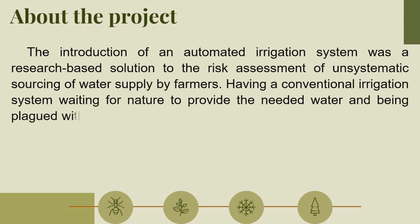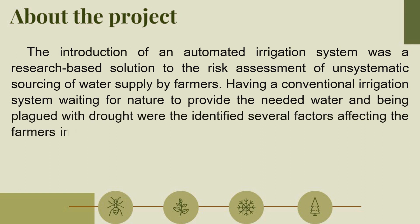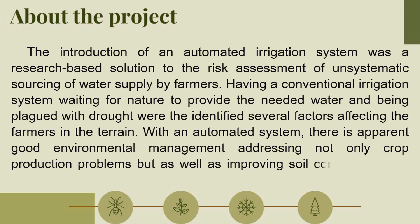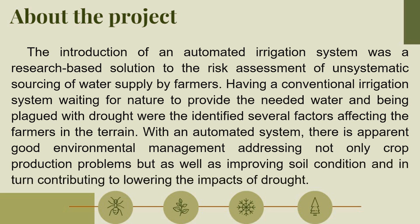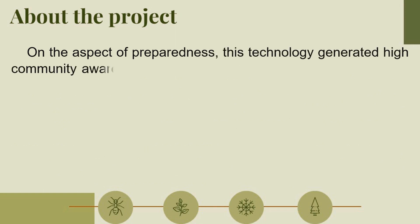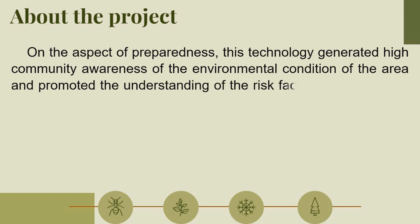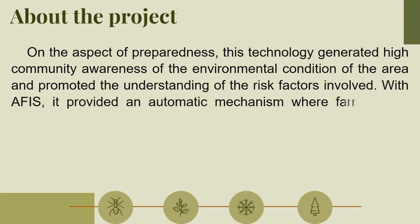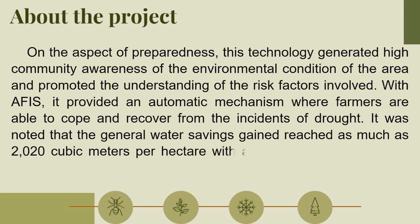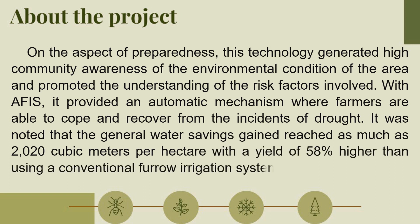Having a conventional irrigation system waiting for nature to provide needed water, and being plagued with drought, were identified as key factors affecting farmers in the terrain. With an automated system, various good environmental management practices address not only crop production problems but also improve soil condition, contributing to lowering the impacts of drought. On the aspect of preparedness, this technology generated high community awareness of environmental conditions and promoted understanding of risk factors. With AFIS, farmers are able to cope and recover from incidents of drought. It was noted that water savings reached as much as 2,020 cubic meters per hectare, with a yield 58% higher than using a conventional furrow irrigation system.